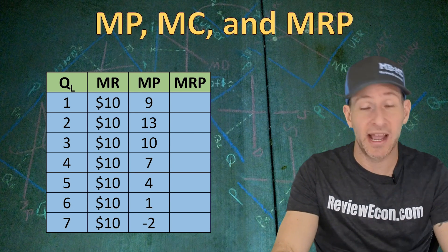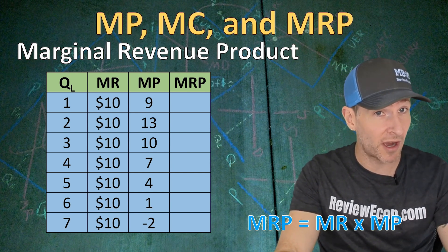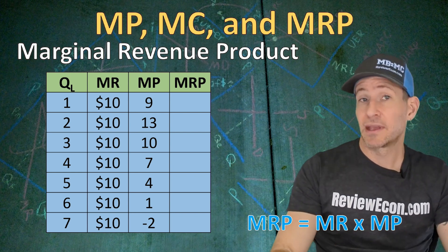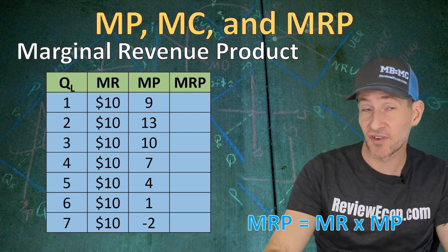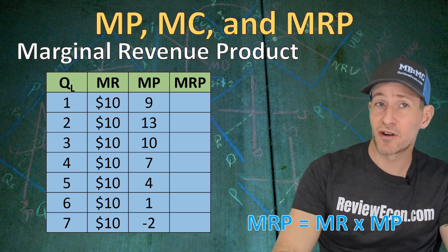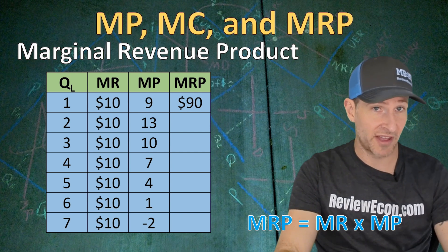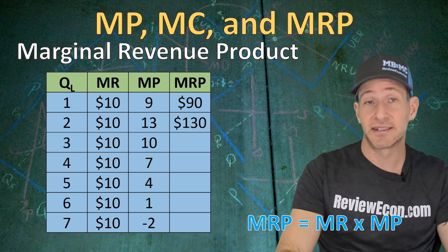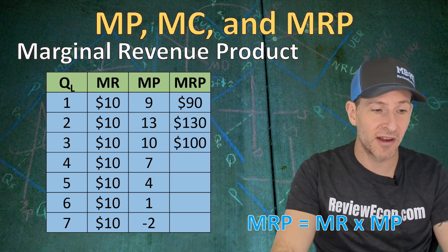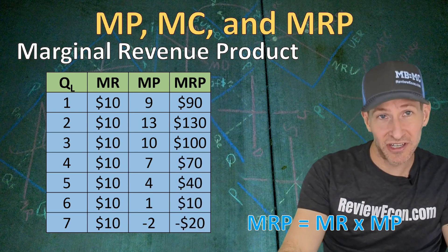In order to understand the demand for labor, we need to understand the marginal revenue product of labor. To find the marginal revenue product, we take the marginal product of each worker hired and multiply it by the marginal revenue of the units produced. Here we have marginal revenue of $10 for each unit, meaning this firm is selling in a perfectly competitive market because the price doesn't change as they produce more output. So the first worker's marginal product of 9 times the $10 marginal revenue gives us $90 of marginal revenue product. The second worker gives $130, the third $100, and so on — multiplying each marginal product by the marginal revenue.